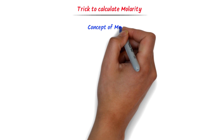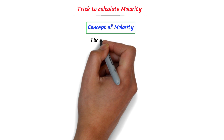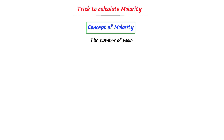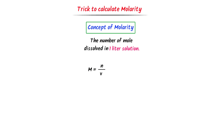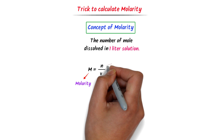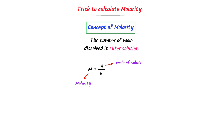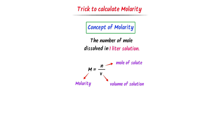Easy trick to calculate molarity. Firstly, let me quickly revise the concept of molarity. We define molarity as the number of moles of solute dissolved in one liter of solution. The formula of molarity is M equals N upon V, where M is the molarity of a solution, N is the number of moles of a solute, and V is the volume of a solution.